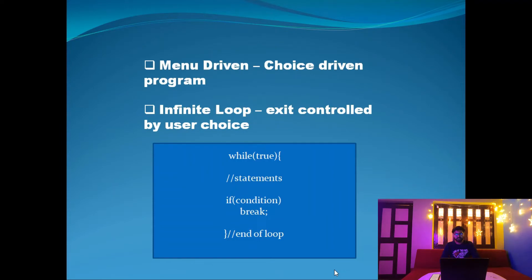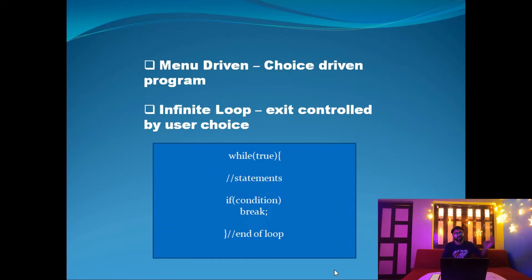Now let's check out the important concepts we are going to use. This program will be a menu-driven, choice-driven program. There will be a list of rooms — single sharing, double sharing, deluxe, super deluxe, etc. — with prices printed on screen. The user selects an option and the program checks whether that room type is available.